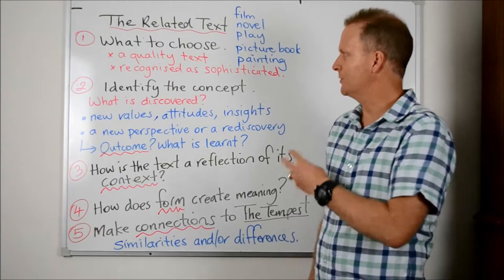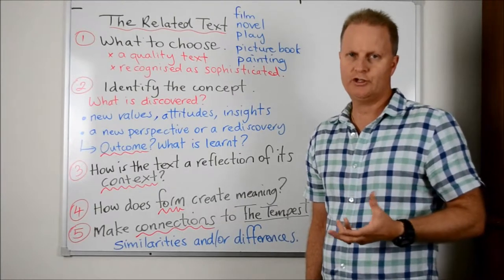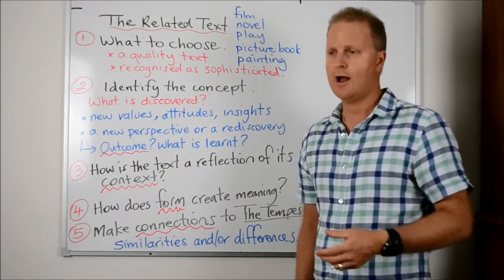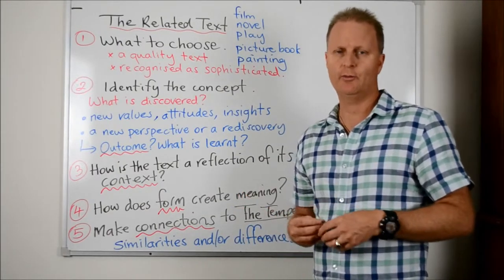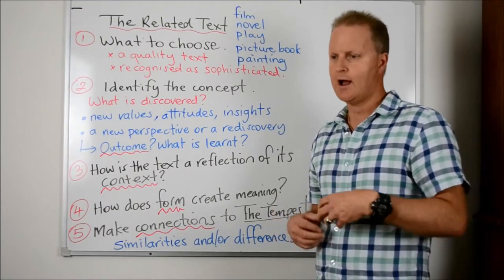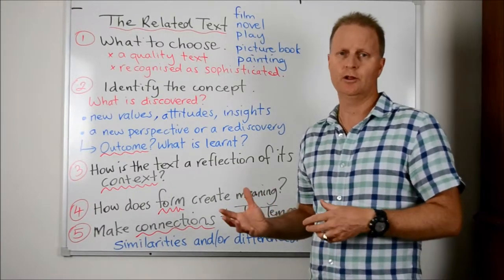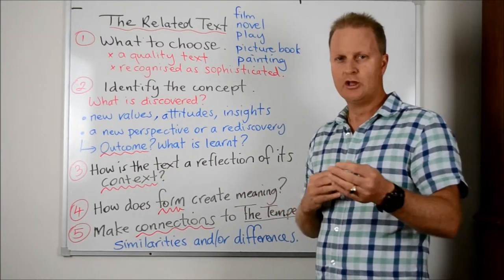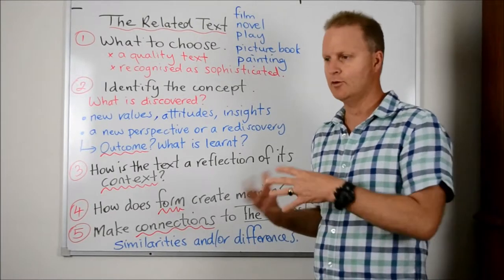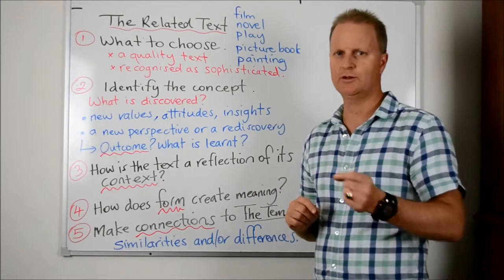What you want to do is make connections to The Tempest. Some of those might be similarities and others may be differences — well, you might find there's a blend of the two. It's quite okay to select texts where you're saying that the process is completely different or the outcome is completely different to The Tempest. But within doing that, you're going to make some observations about the development of the character in your text and Prospero or one of the characters in the play, and just make some subtle connections between the two.